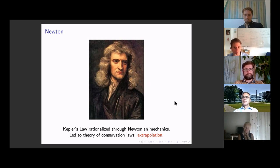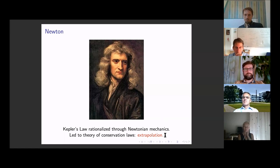Newton's work rationalized this through a first-principles approach — Newtonian mechanics — which explains Kepler's laws as a consequence of underlying principles, and led to much more complex modelling and the theory of conservation laws. An important point is that extrapolation beyond the region where data was given was a major part of the success of mathematical modelling. I would like to contrast this with machine learning, which currently does little in the way of extrapolation. Data played a big role but led to the theory of conservation laws, which extrapolates well beyond where the data was given.